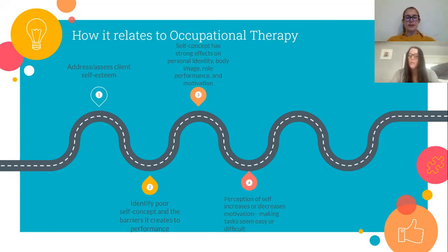Perception of self can either decrease or increase motivation, therefore making your perception of a task as difficult or easy. If you perceive yourself as doing badly on a math test, you are more likely to get a bad grade on that test. If you walk into a situation confidently, it is more likely you will get increased satisfaction out of that task. Poor self-concept and lack of motivation can make occupational performance increasingly difficult — the mindset of 'why try, I won't be able to do it anyway' can be debilitating to a person's performance in occupations. High self-esteem, motivation, and satisfaction of a person participating in a meaningful task in a least restrictive environment creates optimal occupational performance.